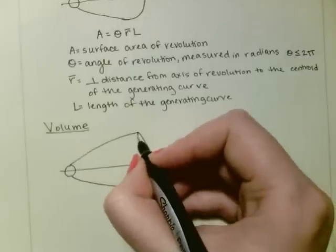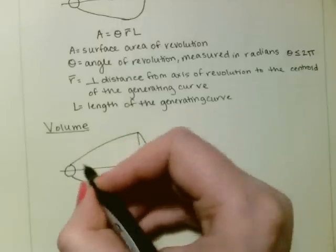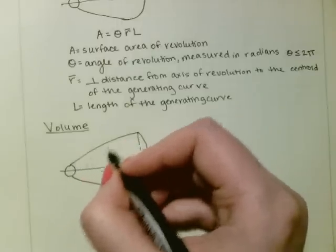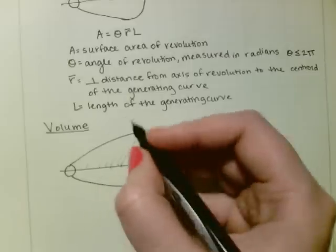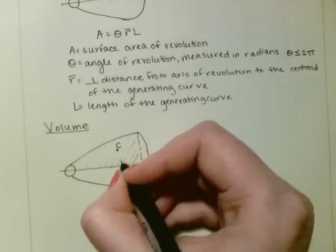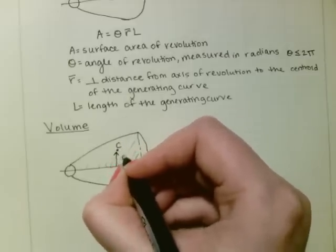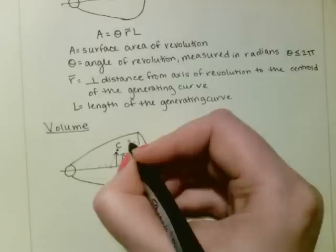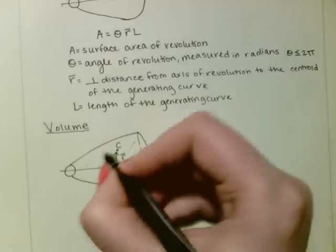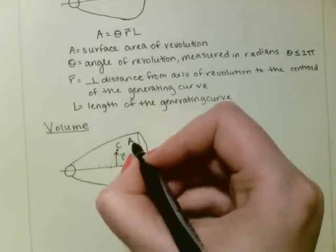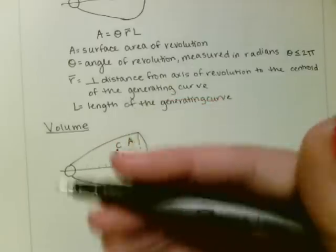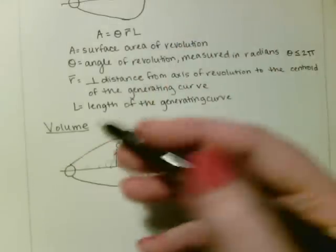So if you were to take this area, having a centroid of C and this distance being r̄, this entire shaded section being the area, you could take that area, rotate it around the axis and find the volume.